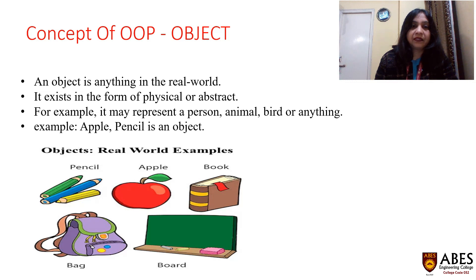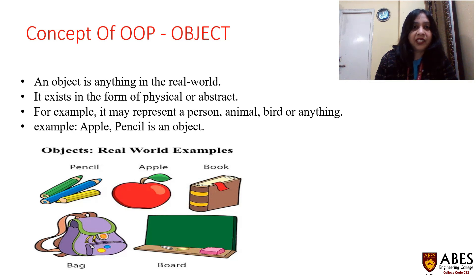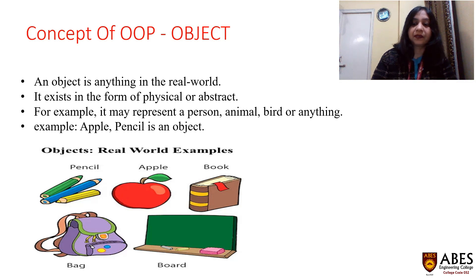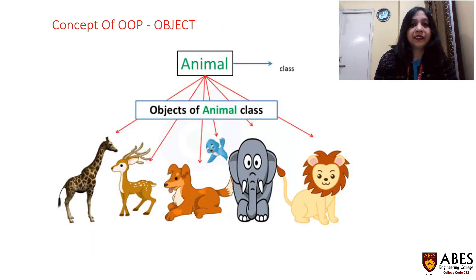What is the concept of object? Objects are any real-world entities — they have certain attributes, they are identifiable, and they have a unique identity. For example, an object may represent a person, an animal, a bird, or anything. As you can see in the diagram, apple is an object, pencil is an object — any real-world entity is an object. These are examples of objects of the animal class.